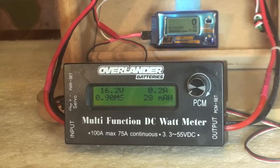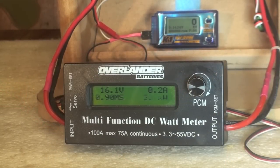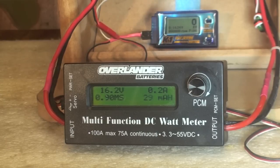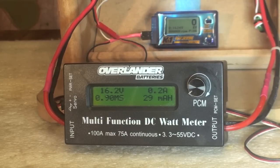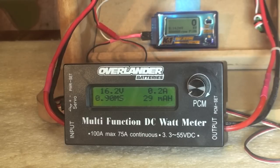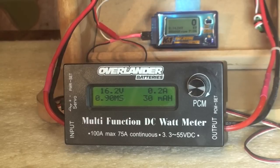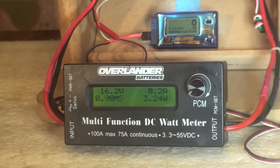On this demonstration here, I'm using the Overlander multifunction DC watt meter. It's a pretty good meter. I can run the PCM output on it with the dial there on the right. It's a pretty handy meter, but it doesn't hold the readings, so you have to pretty much watch it as you're running up the RPMs on it to check your amp draw, what kind of watts you're putting out.